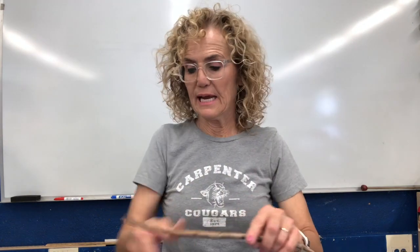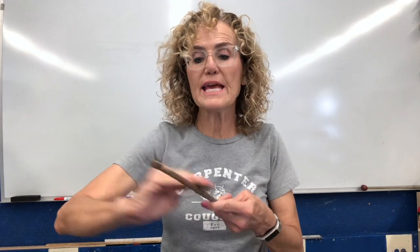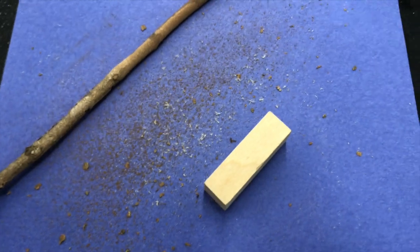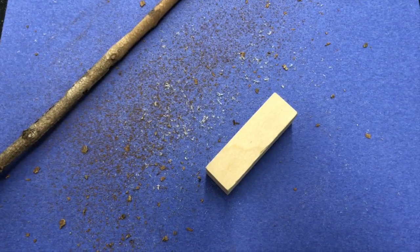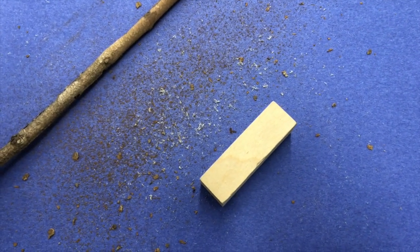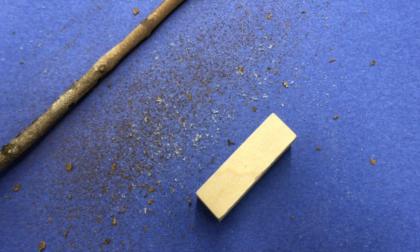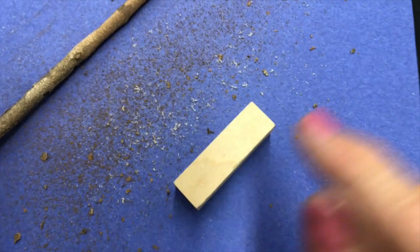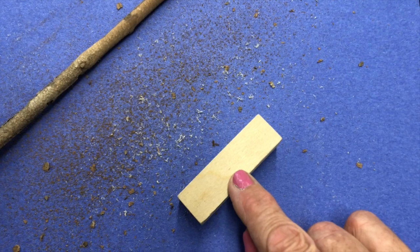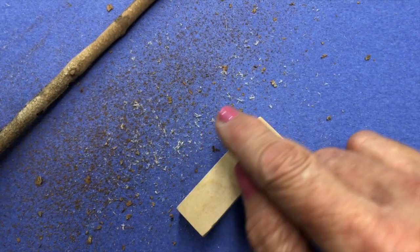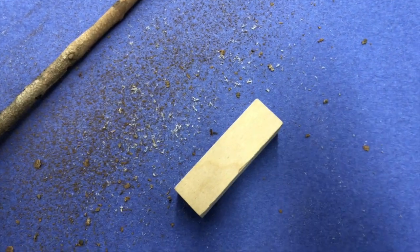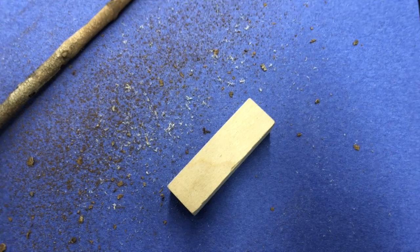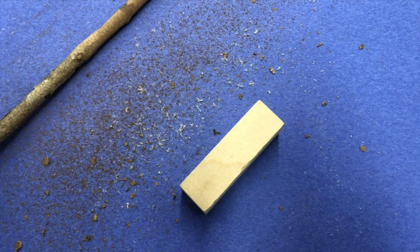That's interesting. By using sandpaper, I can change the wood. Boys and girls, I want you to notice how the sawdust is different now. My stick was darker, and so the sawdust is darker. The bass wood was really light in color. So the color of the sawdust depends on the color of the wood.